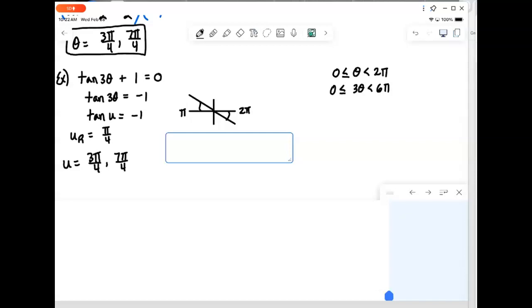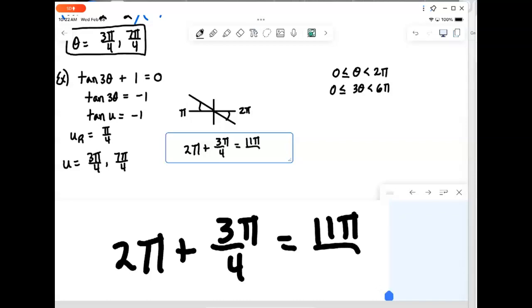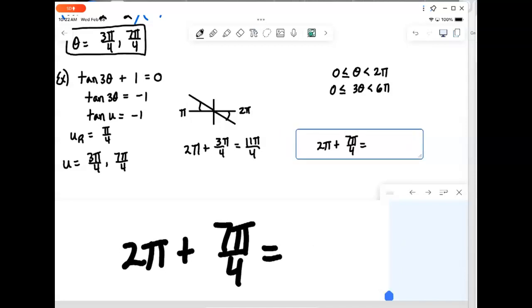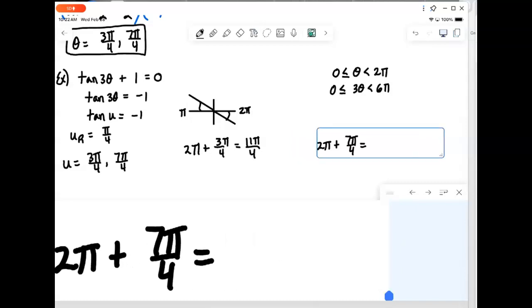And think of these as just like mixed numbers. So, that's 2 and 3 fourths. So, 2 times 4 would be 8. That would be 11 pi over 4. And then, we do the same thing with the 7 pi over 4. We add a 2 pi onto it. That would be 2 and 7 fourths. We convert by taking 2 times 4 is 8 plus 7. 15 pi over 4. So, just using that old technique to convert a mixed number into an improper fraction.